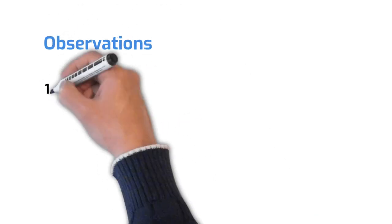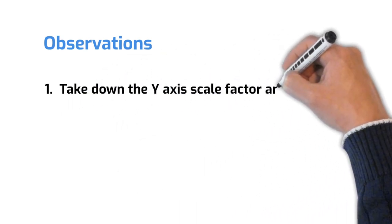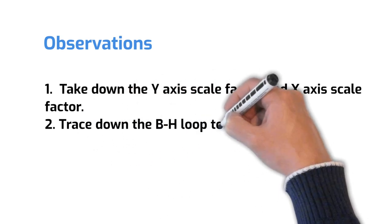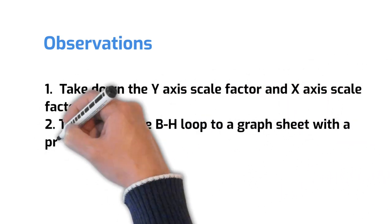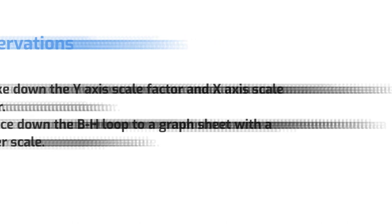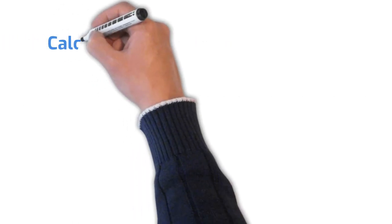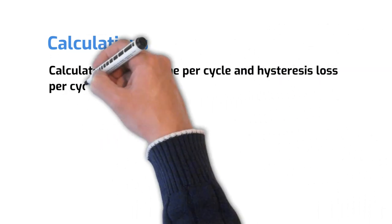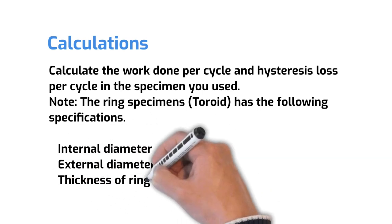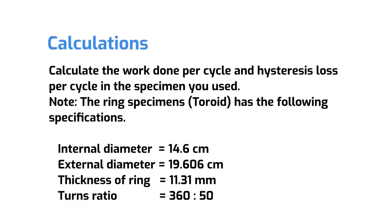Pause the practical video and observe the oscilloscope measurements carefully. Take down the y-axis scale factor and x-axis scale factor and then trace down the B-H loop to a graph sheet using a proper scale. Calculate the work done per cycle and hysteresis loss per cycle in the specimen you used. Use the following specifications for the ring specimen.